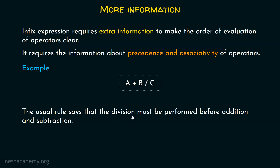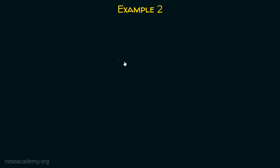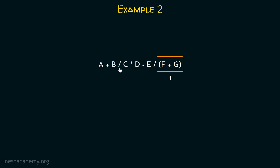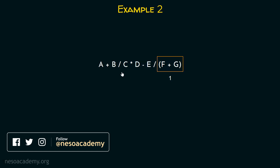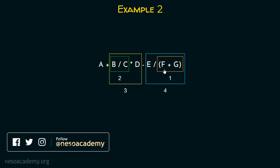Let's see one more example: A plus B divided by C into D minus E divided by F plus G, with parentheses. This expression in parentheses will be evaluated first because parentheses have the highest priority. Then the division and multiplication operators are evaluated left to right, since multiplication and division have the same precedence and their associativity is from left to right.